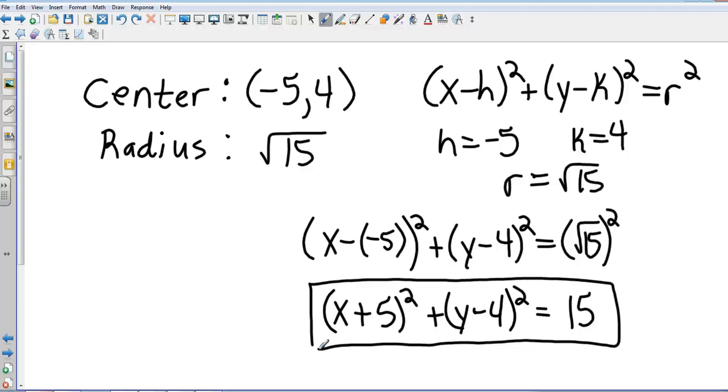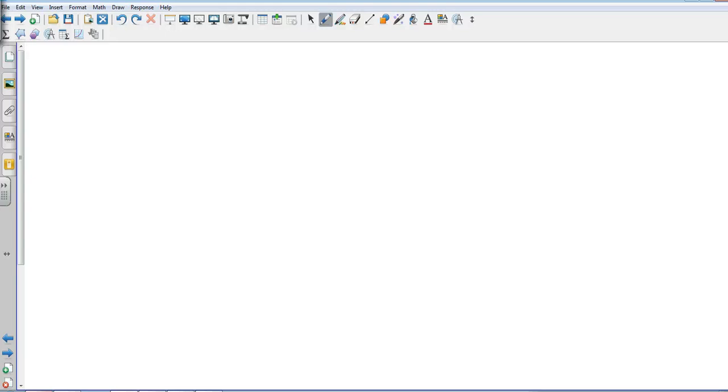What if they don't tell us what the radius is? Let's look at a problem where they're going to give us where the center is. Let's say the center is at negative 2, 4, and let's say it passes through point negative 6, 7. If it passes through point negative 6, 7 that means that point is on the outside of my circle.